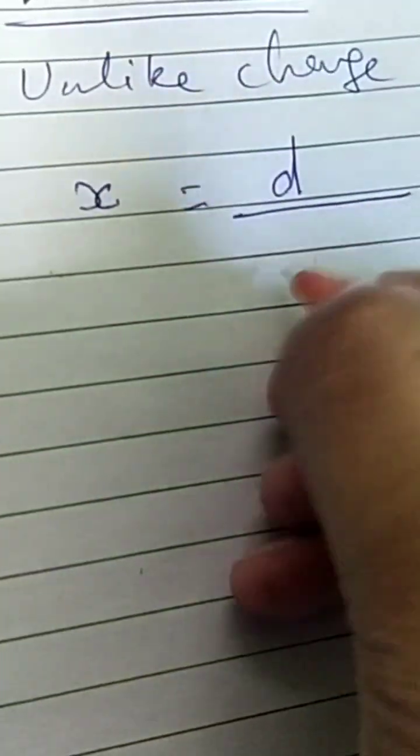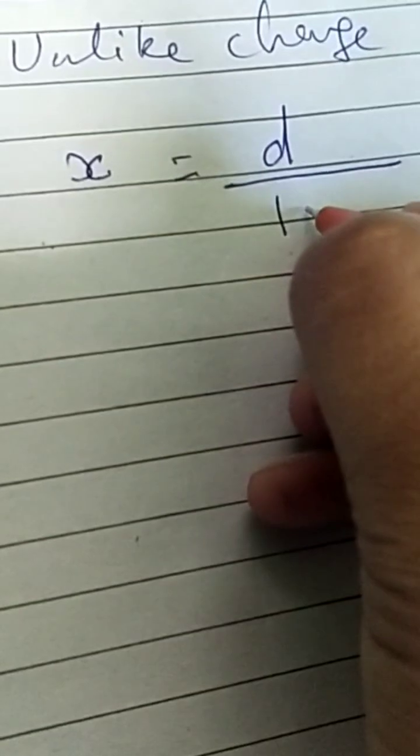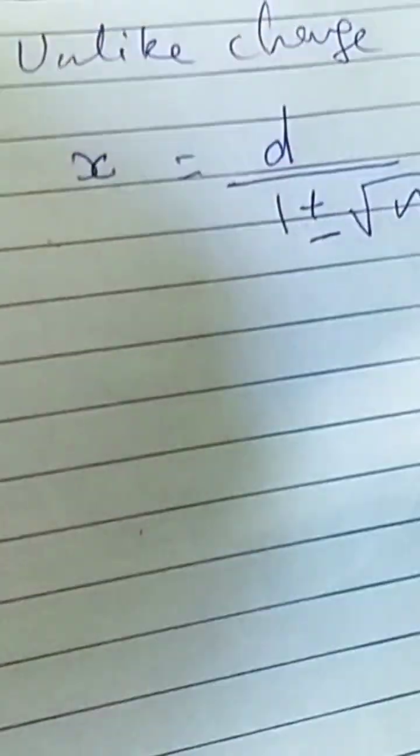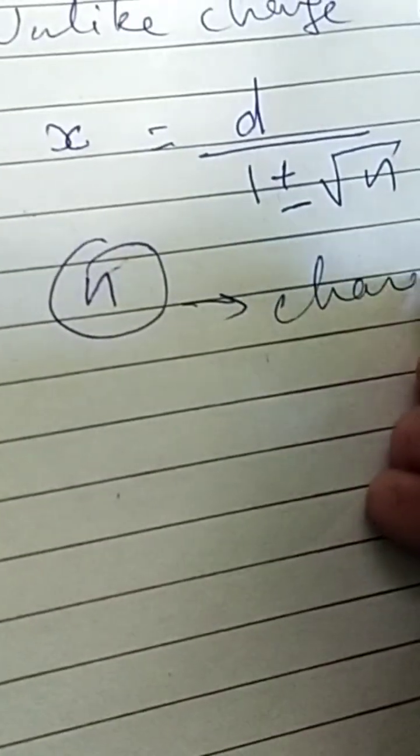The formula is x equals d by 1 plus under root plus minus n. What is n? n is charge. What is n charge? Greater charge.